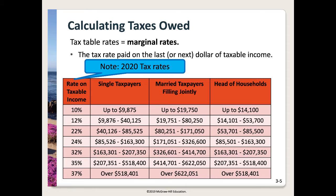Now let's look at how we calculate taxes owed using tax tables. These are marginal rates. Here we have the 2020 tax rates table with three filing options: single taxpayer, married filing jointly, or head of household. You take your income and spread it across the different brackets, applying the appropriate tax rate — like buckets where money is placed and each bucket has an applicable tax rate.